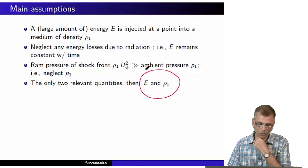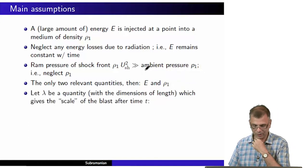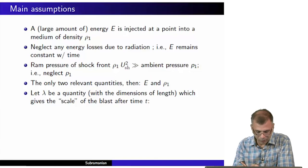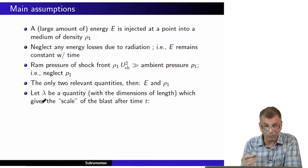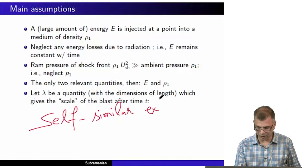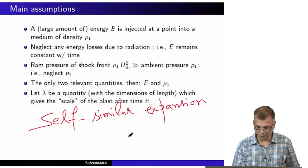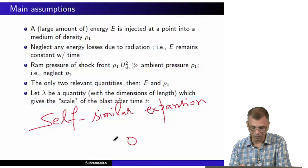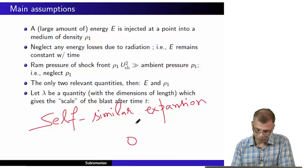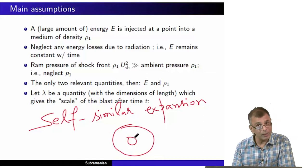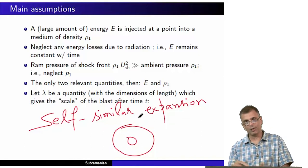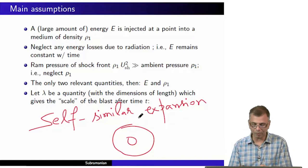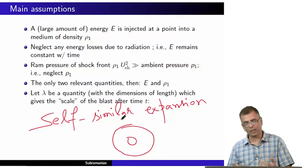There are only two relevant quantities: E and ρ₁. We mentioned self-similar expansion — at time t₁ you have a circle, and at t₂ it has expanded; the shape remains the same with time. It is simply an enlarged version of what it was at an earlier time.